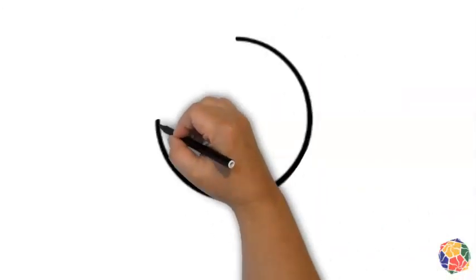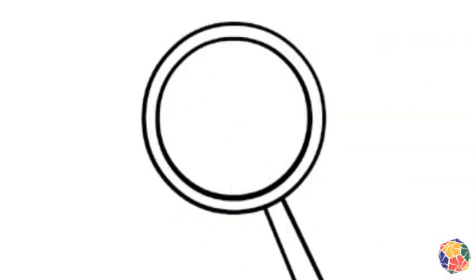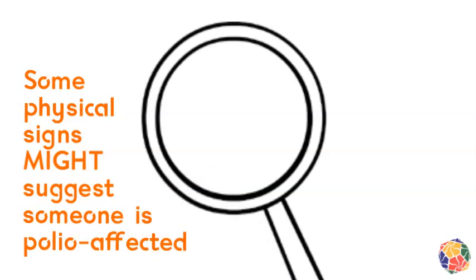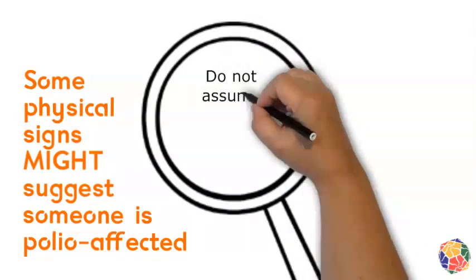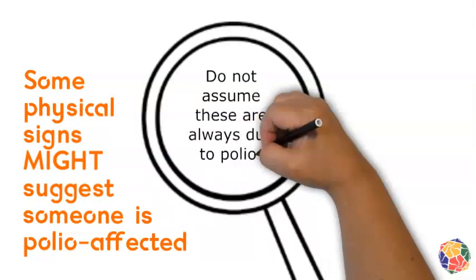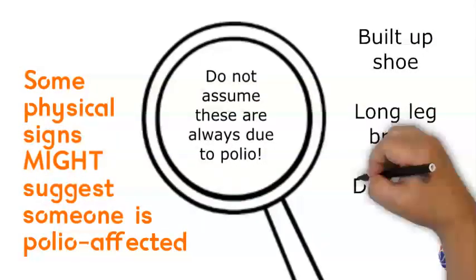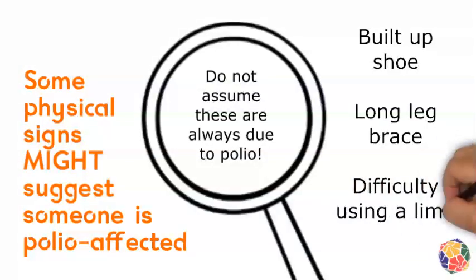Some physical signs may suggest, but not confirm, that someone had polio because they are more commonly seen with those who had paralysis from polio. Physical signs such as using a built-up shoe on one side, or wearing a long leg brace, or having difficulty using an arm or leg a little bit asymmetrically.